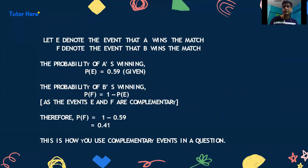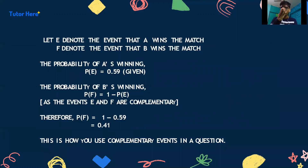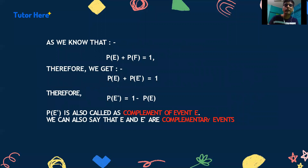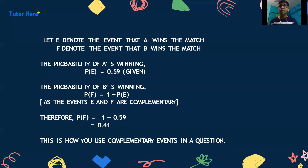Let E denote the event that A wins the match and F denote the event that B wins the match. The probability of A winning, P(E), is 0.59, which is already given. Since there is no other outcome possible — it is either A wins or B wins — E and F are complementary events.